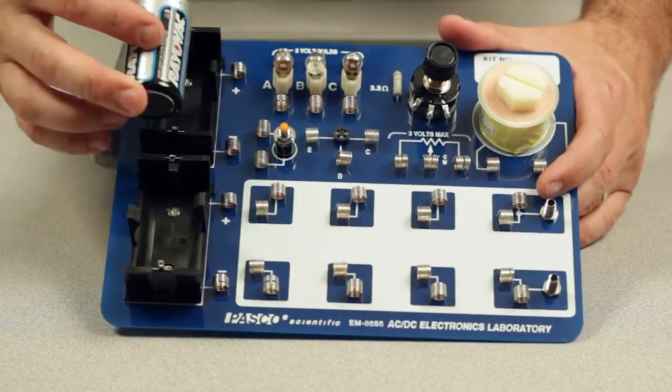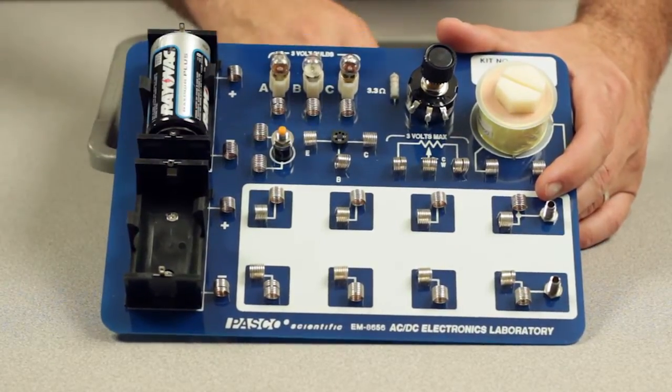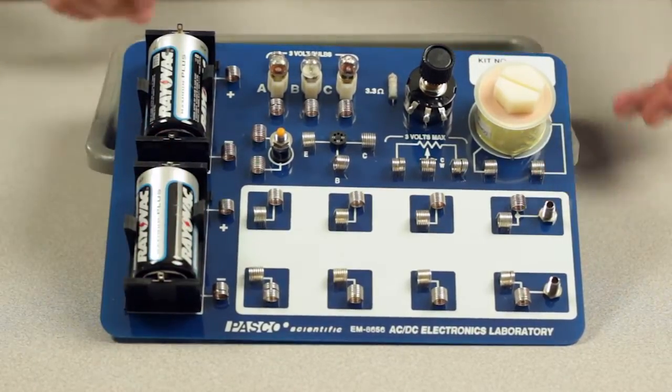The EM8656 AC-DC Electronics Laboratory is a student and demonstration circuit component board powered by two D-cell batteries.